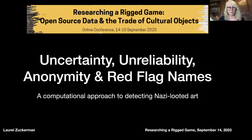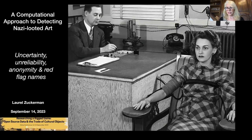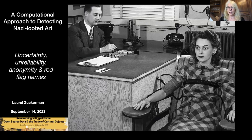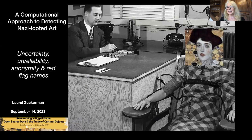I'm Laurel Zuckerman. Thank you very much for joining this session on a computational approach to detecting Nazi-looted art. This unhappy lady strapped to the chair basically sums up the approach. Various bodily functions are being measured — her pulse, her blood pressure, maybe the moisture on the palm of her hands. And this serious-looking guy in the corner is writing it all down. And that's basically what we're going to do — except instead of looking at a person, we're going to look at the provenances of artworks.